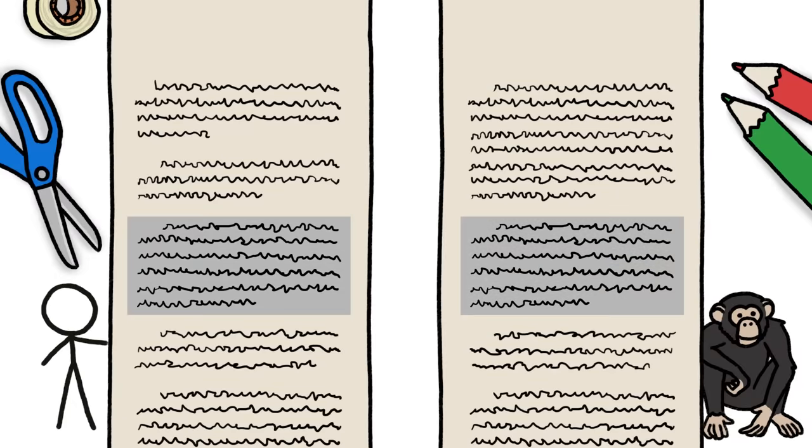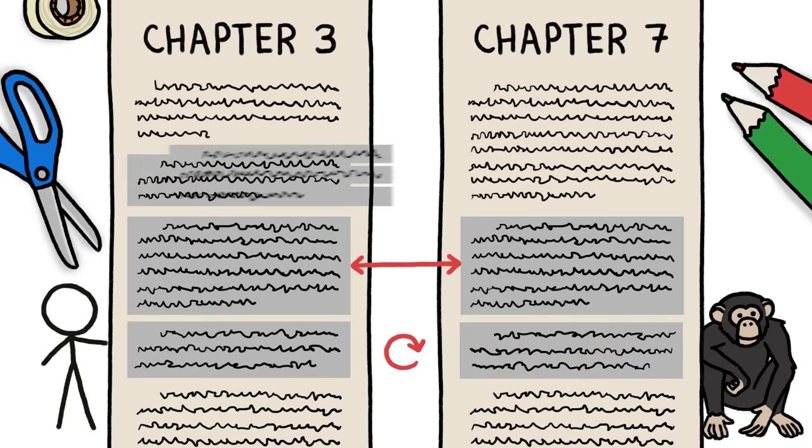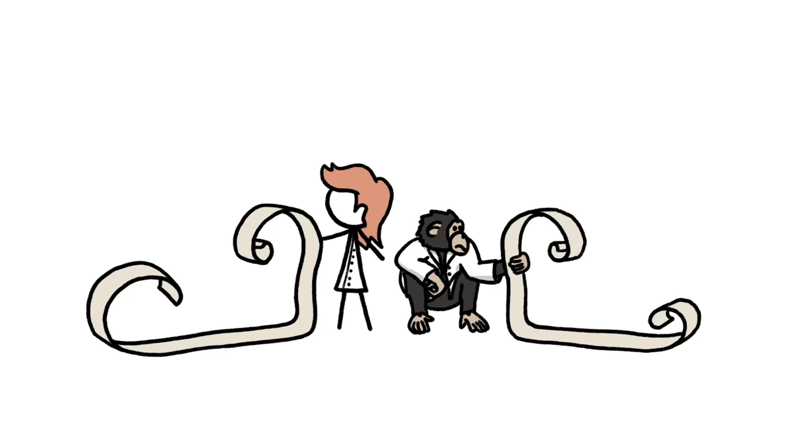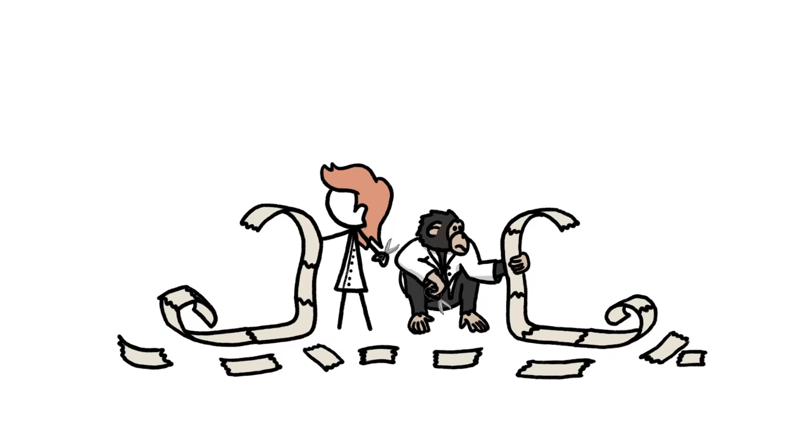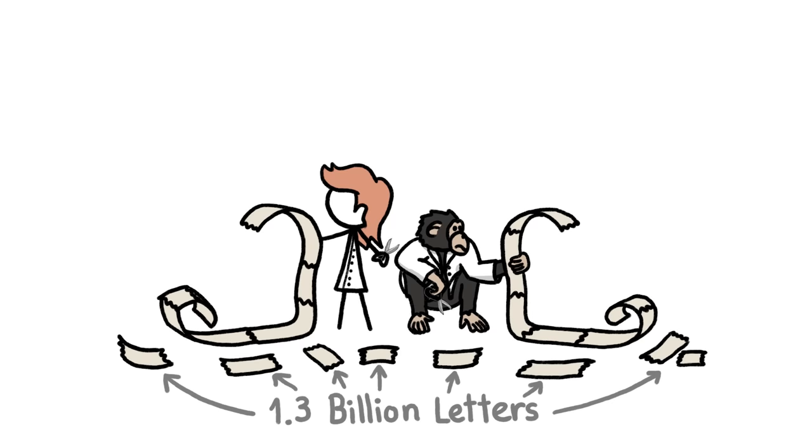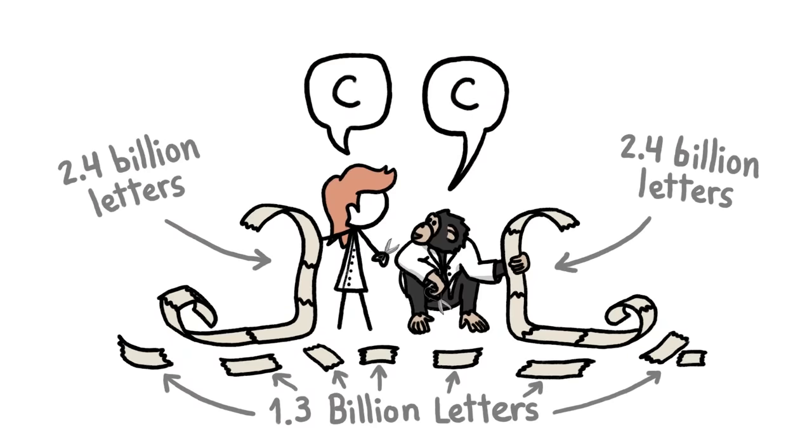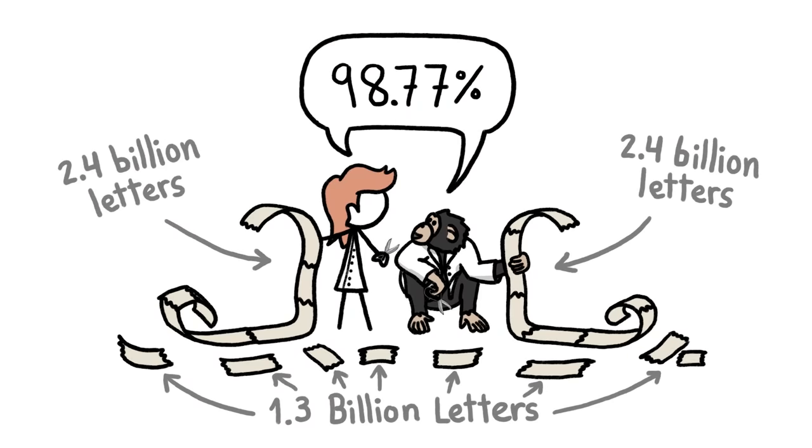And what about identical paragraphs that appear in both genomes, but in different places, or in reverse order, or broken up into pieces? Rather than monkey around with these difficult questions, the researchers simply excluded all the large mismatched sections, a whopping 1.3 billion letters in all, and performed a letter-by-letter comparison on the remaining 2.4 billion, which turned out to be 98.77% identical.